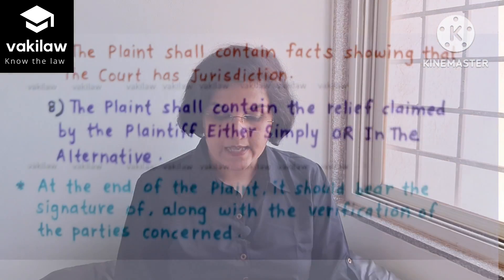The plaint shall specifically state the amount of the relinquished portion of the claim, as provided under Order 2 Rule 1 of the Code of Civil Procedure, 1908. Additionally, the suit has to be valued for the purposes of pecuniary jurisdiction according to the market value of the subject matter of the suit. The valuation does not take into consideration territorial jurisdiction — it is only meant for the purpose of pecuniary jurisdiction.